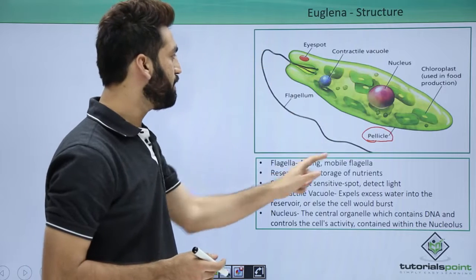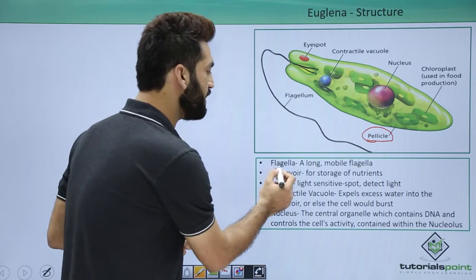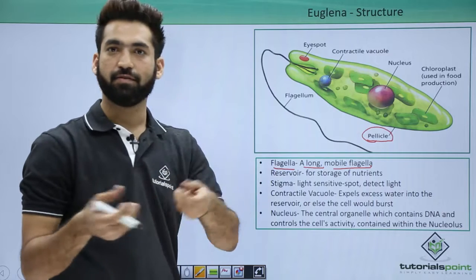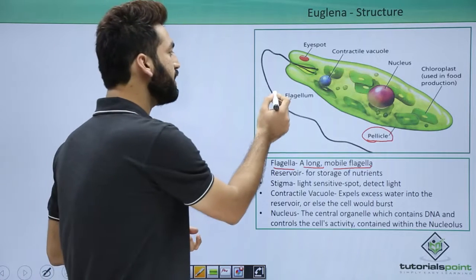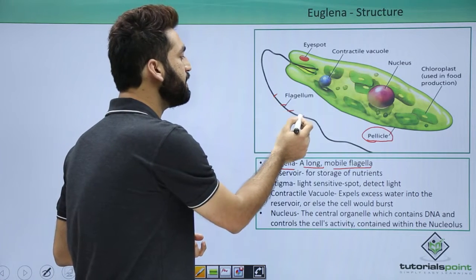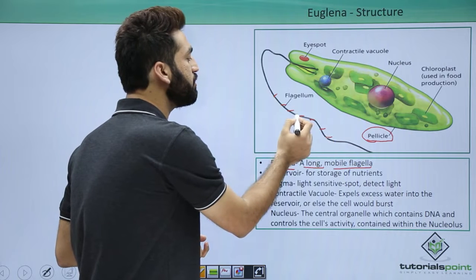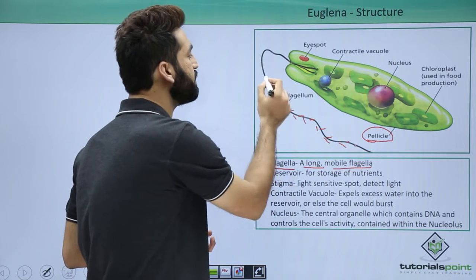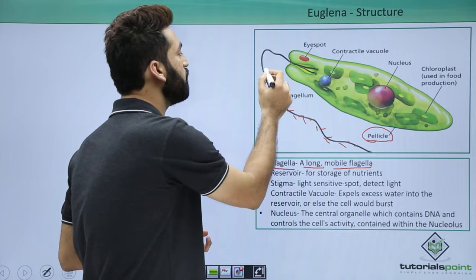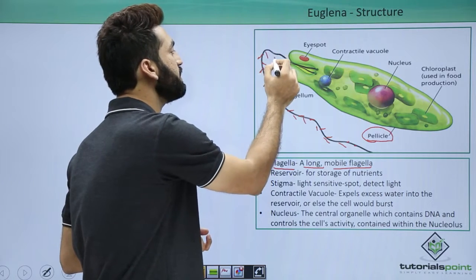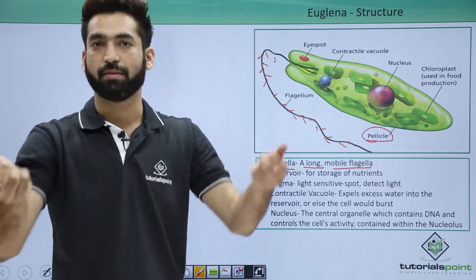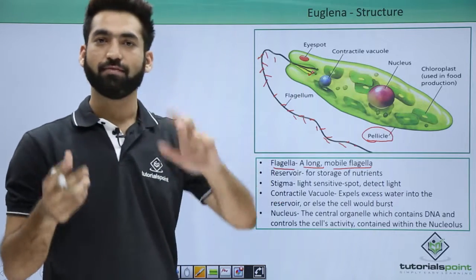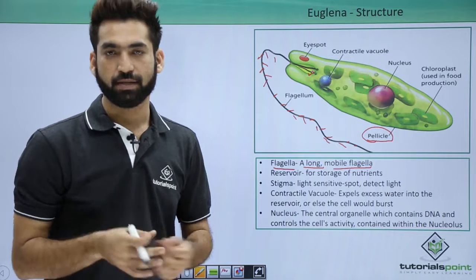There are two flagella. One flagella is long and mobile. Apart from that, on this flagella you will also see some ornamentation, and because of this ornamentation, this flagella is called a stichonomatic flagella. Stichonomatic means it has ornamentation. There is another flagella as well, and because of both flagella being different, they follow heterokont flagellation.